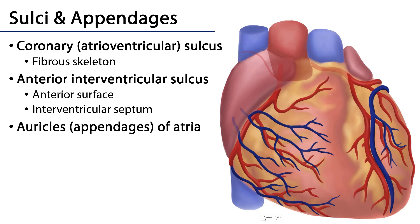The first and probably largest is the coronary sulcus, which can be seen here. It's going to be in line with that fibrous skeleton or the atrioventricular septum — sometimes it's called the atrioventricular sulcus. Anything above this will be atrium: the right atrium and the left atrium. Anything below this will be ventricle: the right ventricle and the left ventricle.